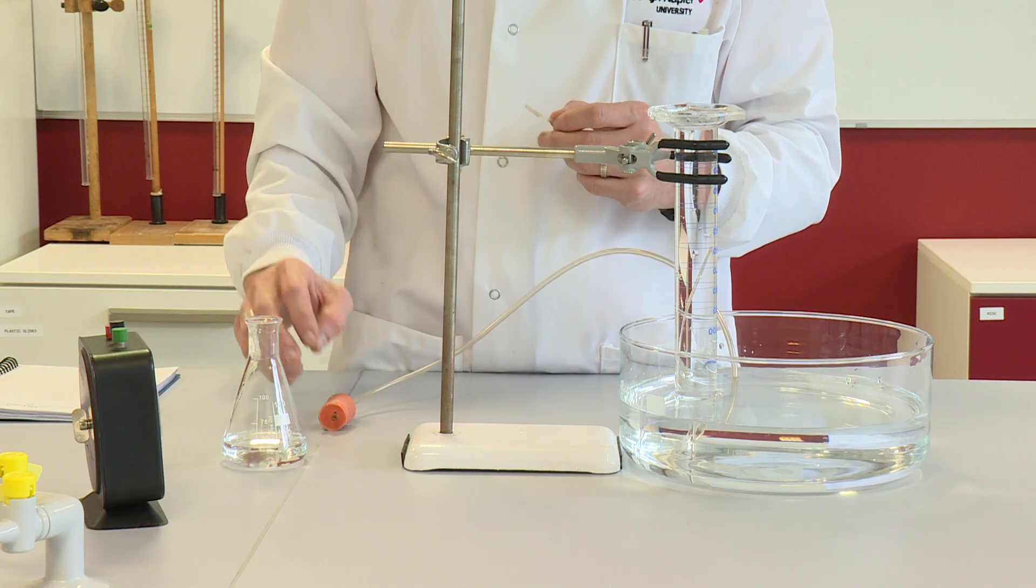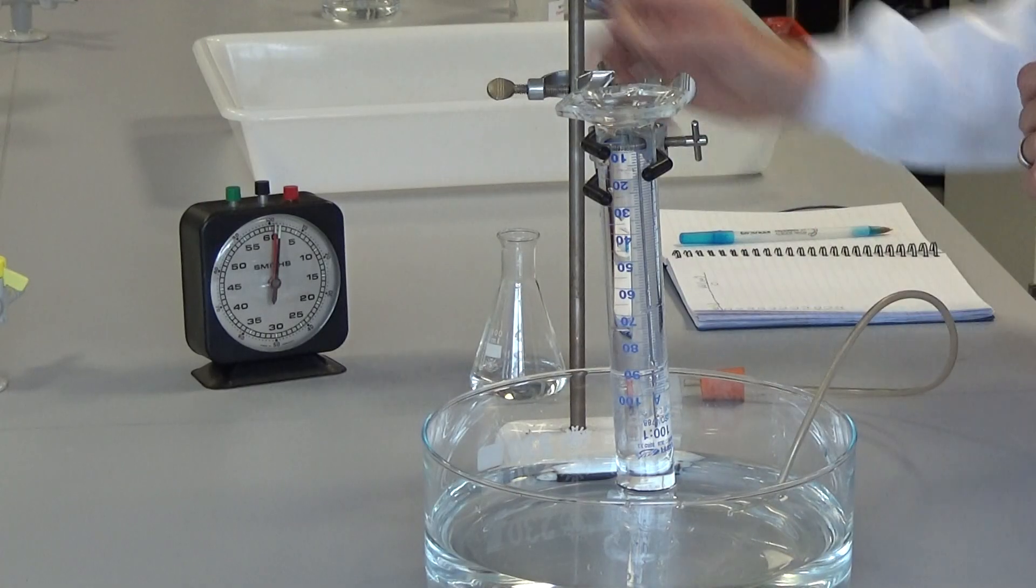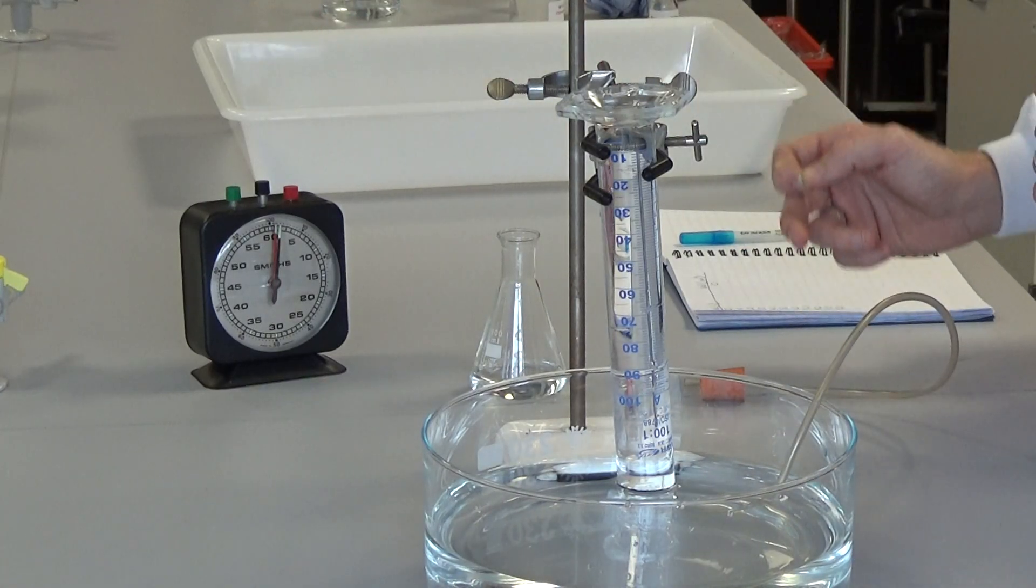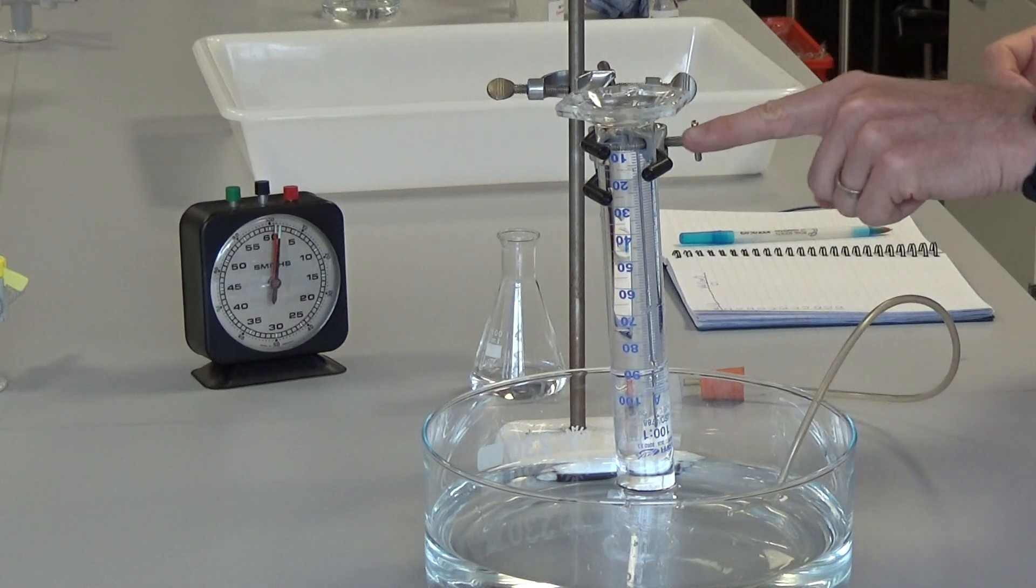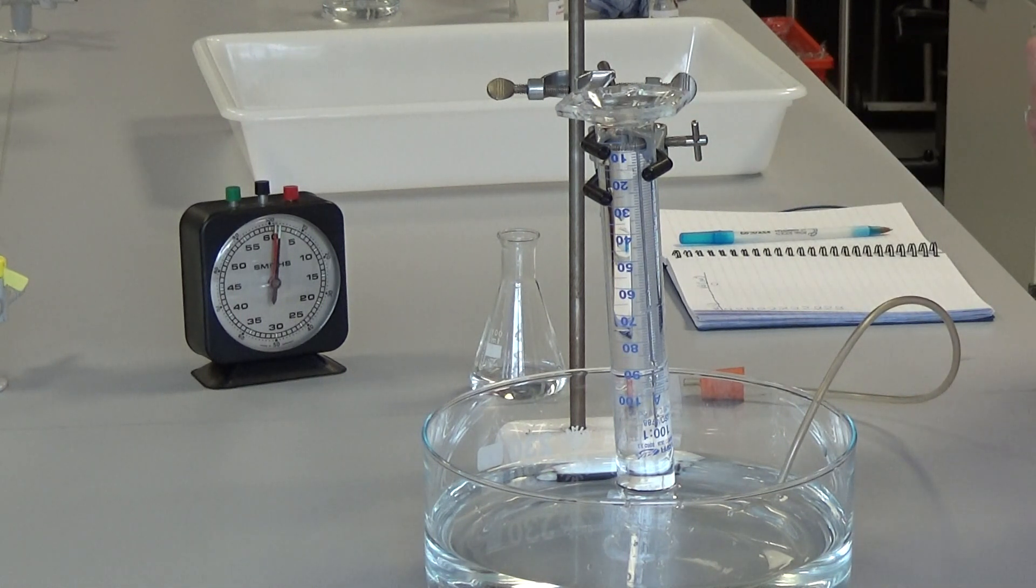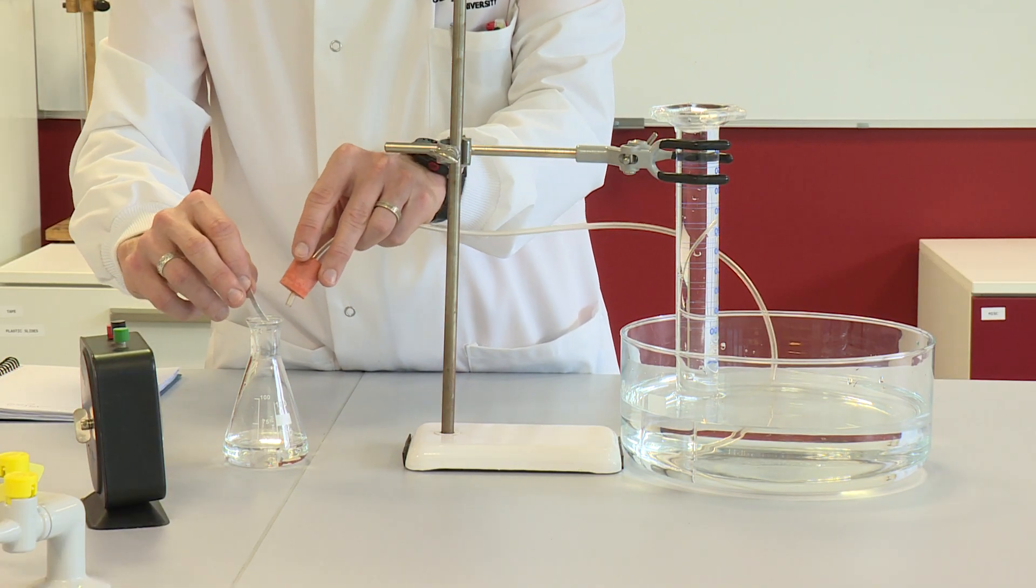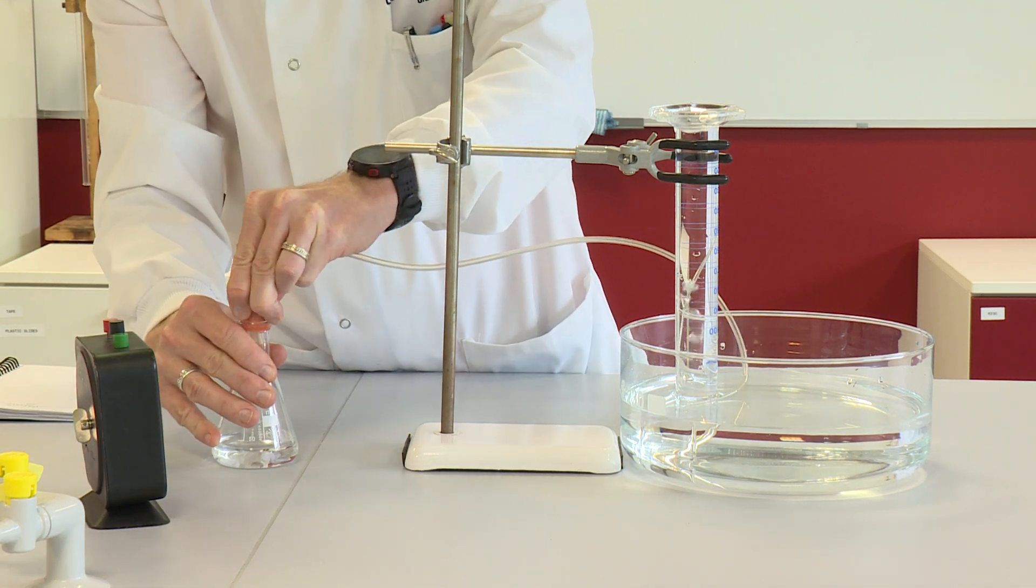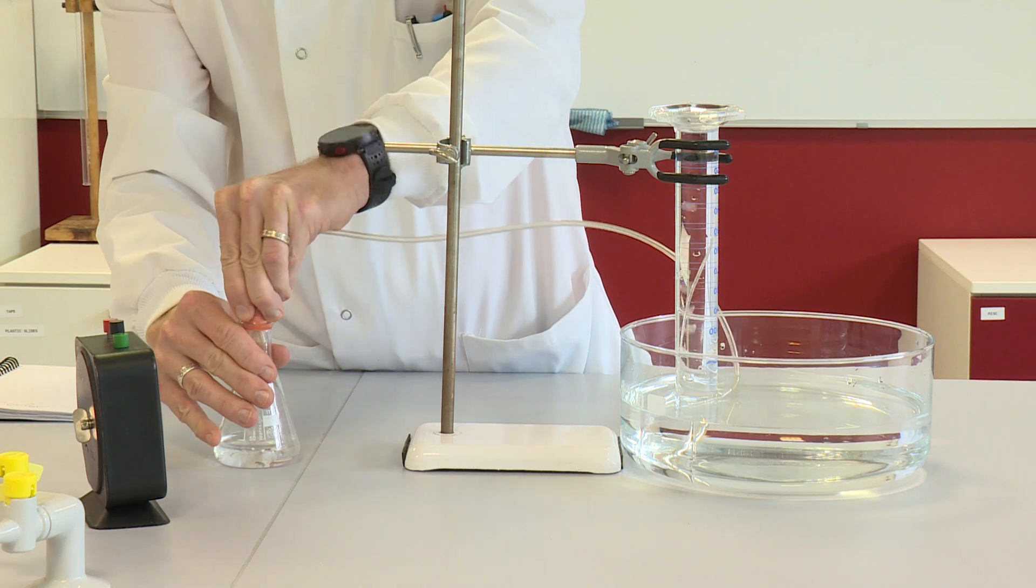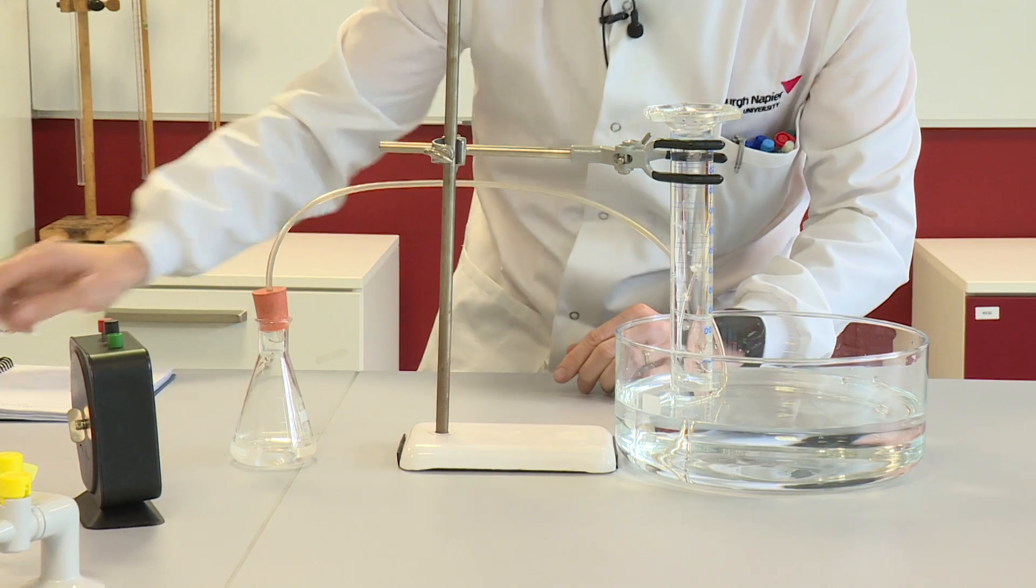I'm going to pop the magnesium into the hydrochloric acid to start the reaction, start the timer and stick the rubber bung into the conical flask. Then I'm going to take a reading of the volume of gas that has been produced every 10 seconds. So we have to do this quickly: put magnesium in, start the clock, rubber bung in, and then take a reading every 10 seconds.